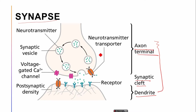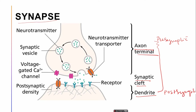The axon terminal of one neuron is also known as the presynaptic neuron, while the dendrite of another neuron is also known as the post-synaptic neuron. The space between them may be 20 to 40 nanometers and that space is known as the synaptic cleft.